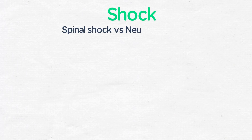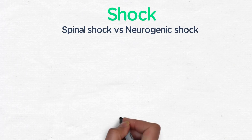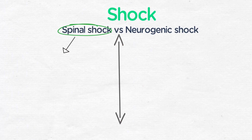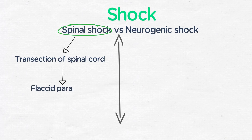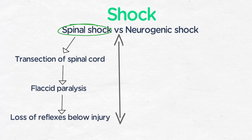You should also know about spinal shock and how it differentiates from neurogenic shock. Spinal shock results from the transection of the spinal cord and results in flaccid paralysis and loss of reflexes below the injury. It is generally temporary, lasting hours to days, and typically over the first few days some reflexes will return, especially the anogenital reflexes.